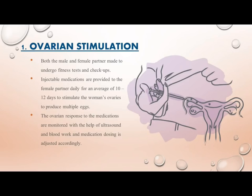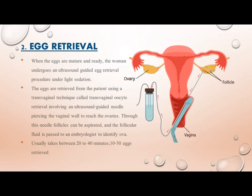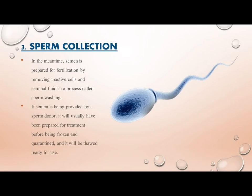Step 2 — Egg Retrieval: when the eggs are mature and ready, the woman undergoes an ultrasound-guided egg retrieval procedure under light sedation. The eggs are retrieved using a transvaginal technique called transvaginal oocyte retrieval, involving an ultrasound-guided needle piercing the vaginal wall to reach the ovaries. Follicles are aspirated and the follicular fluid is passed to an embryologist to identify ova. The procedure usually takes 20–40 minutes, with 10–30 eggs retrieved. Step 3 — Sperm Collection: semen is prepared for fertilization by removing inactive cells and seminal fluid through a process called sperm washing. If using a donor, the sperm is thawed from frozen quarantined samples.